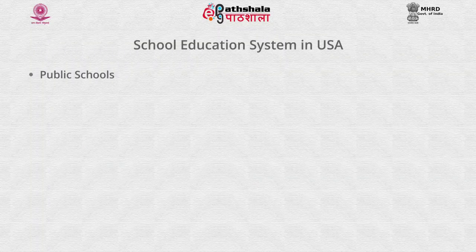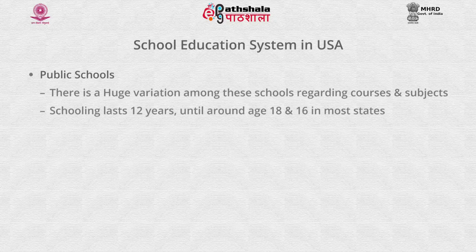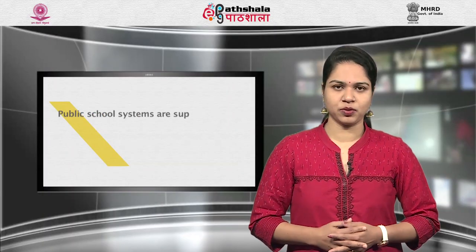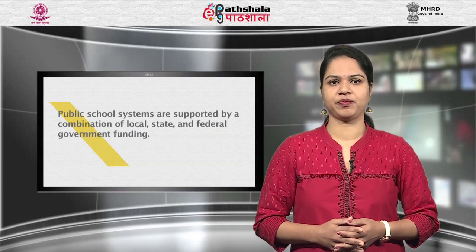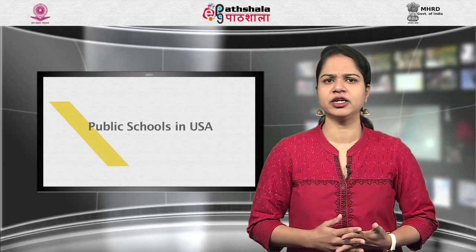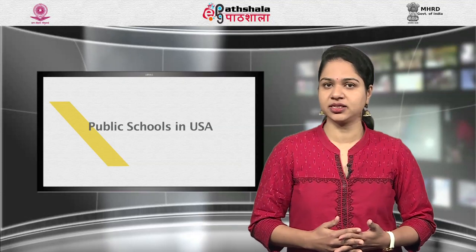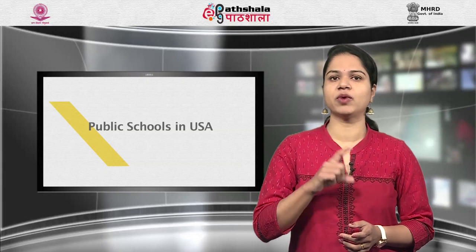In public schools, there is a huge variation among these schools regarding courses and subjects. Schooling lasts for 12 years until around age 18 and access is completely free to pupils. Public school systems are supported by a combination of local, state and federal government funding. Because a large portion of school revenues come from local property taxes, public schools vary widely in the resources they have available per student. Class size also varies from one district to another.